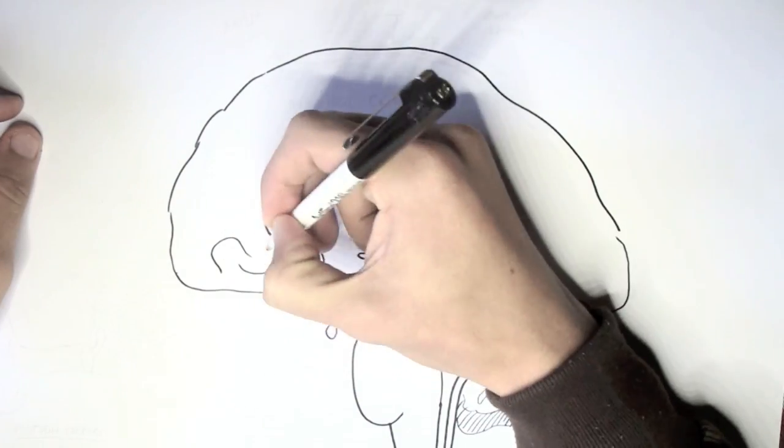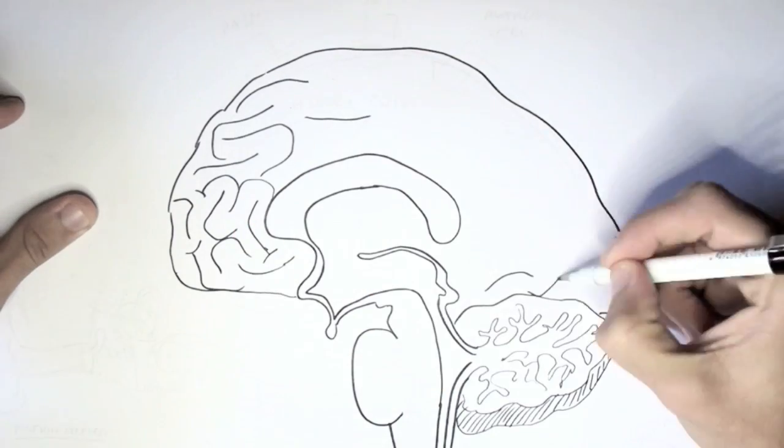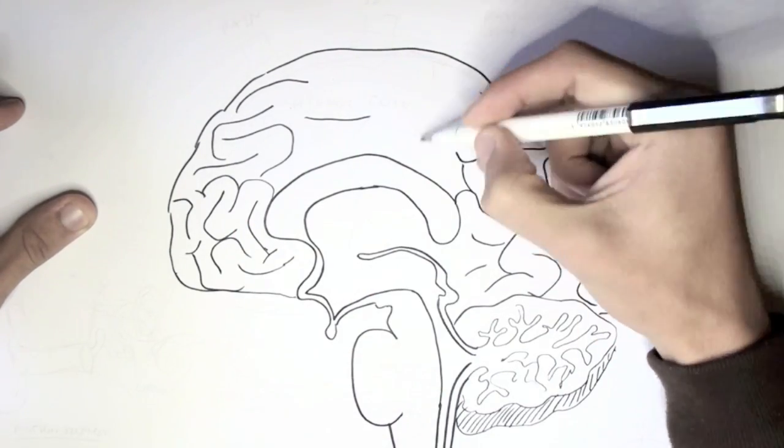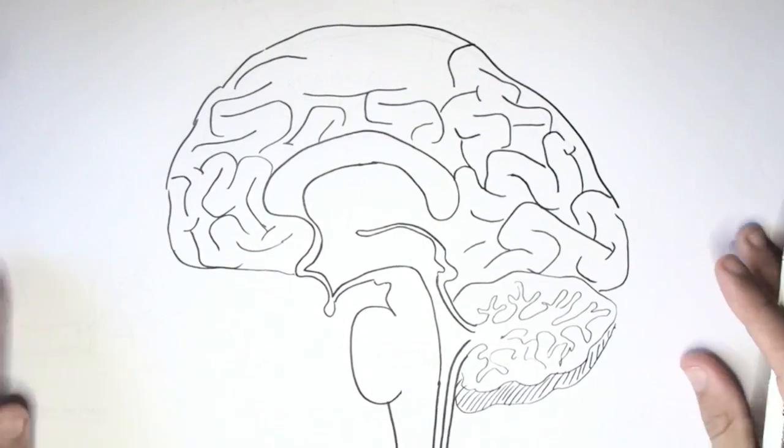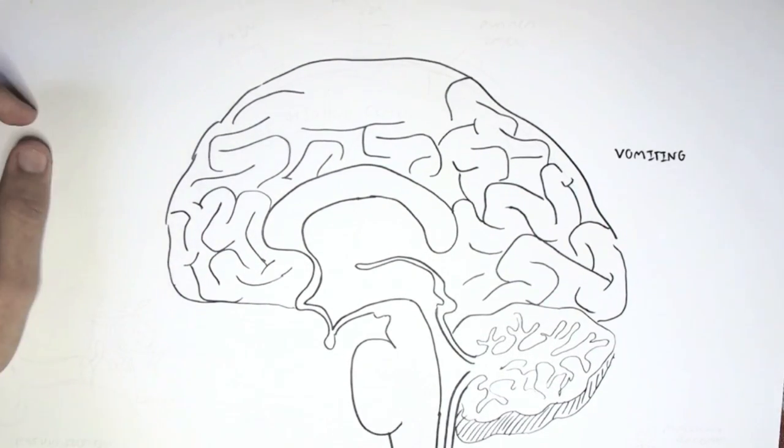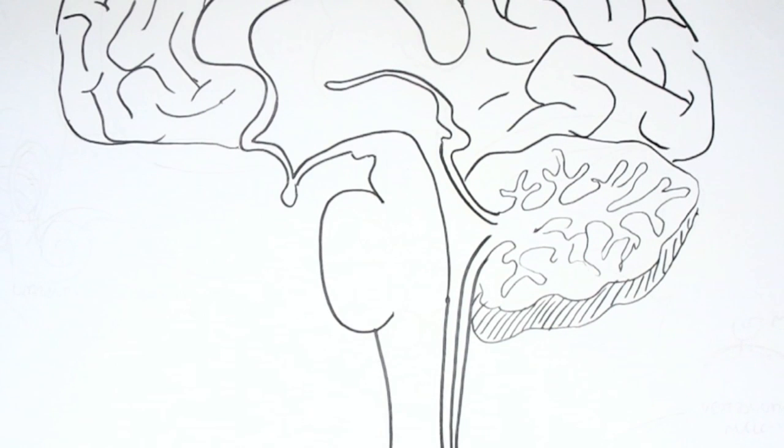But how do we vomit? What physiological mechanism causes us to vomit? Well, all the centers or areas related to initiating the act of vomiting come from the central nervous system, particularly the brainstem, the area I am zooming into.